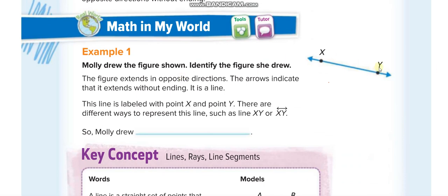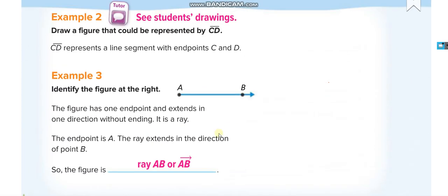The first example shows a figure with two arrows and points named X and Y. Since it has two arrows, it is a line. You can write Line XY, or you can write XY with a small double-arrow line above it.